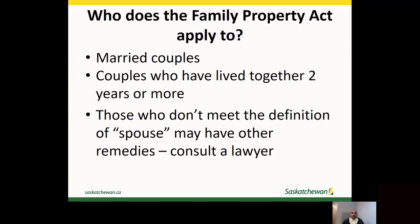The Family Property Act applies to spouses. The term spouses is defined as married couples or couples who have lived together for at least two years without any breaks. This includes both heterosexual and same-sex couples. Couples who aren't married and haven't lived together at least two years may still have remedies with respect to property. It is a good idea to get legal advice from a lawyer about what remedies there may be.